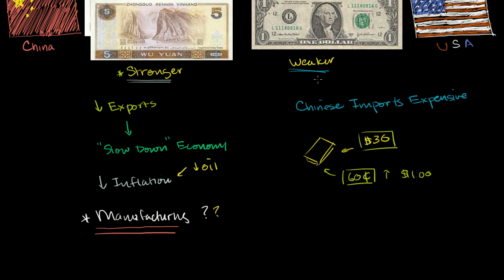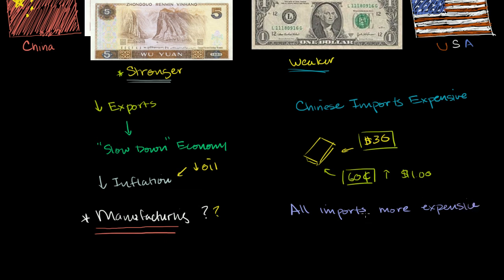The impact that the weakening of the dollar would have on inflation is the idea that all imports would become more expensive. All imports potentially — and this depends how other countries react to the weakening dollar — could become more expensive. The most important import, and once again this depends on how these currencies react relative to some of the oil-producing currencies, is oil. Oil producers actually peg to the dollar, so it might not be as dramatic as you would think.